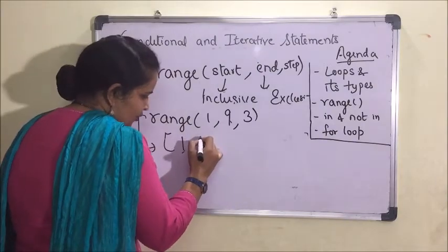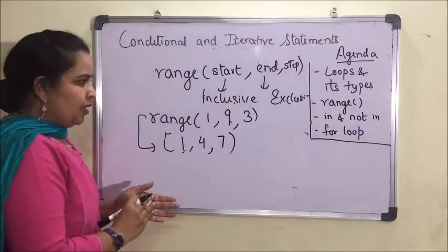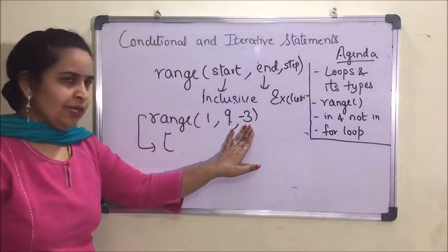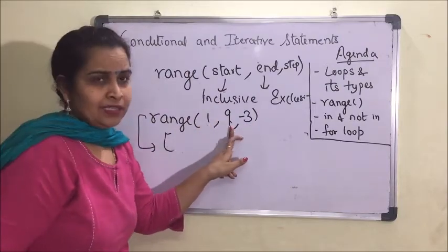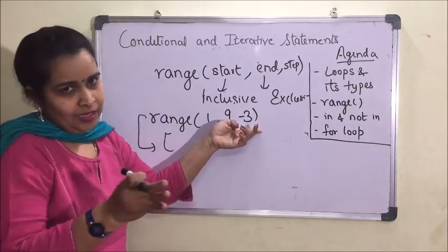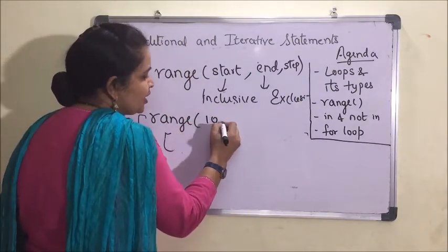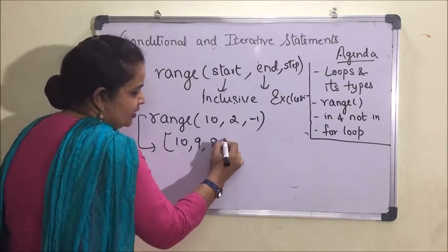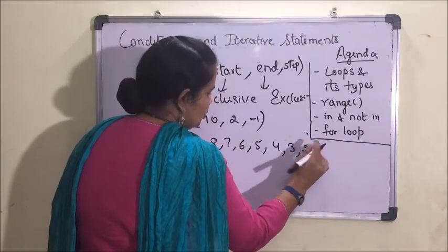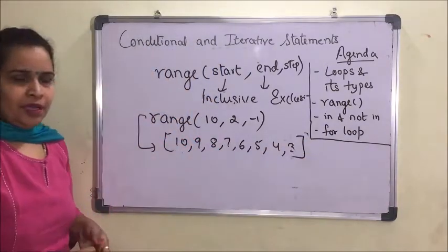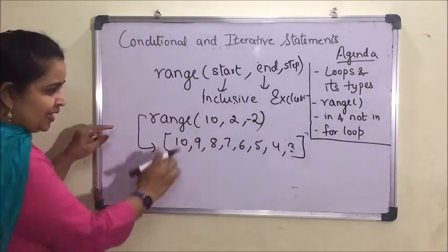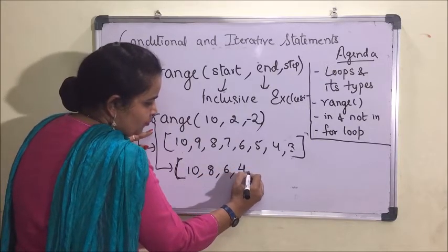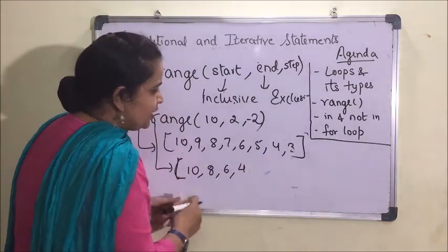If the step value is 3, it will return 1, 4, 7. We also have negative step values. If we use a negative step value with start smaller than end, nothing will be returned. For a negative step, the start should be larger and end should be smaller. For example, range(10, 1, -1) will return 10, 9, 8, 7, 6, 5, 4, 3, 2 — since 1 is exclusive. With step -2, range(10, 1, -2) returns 10, 8, 6, 4, 2.